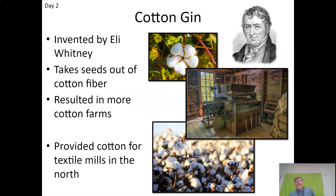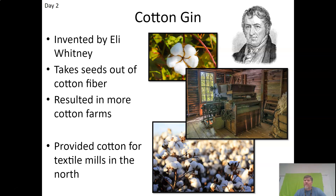One of the most important inventions is the cotton gin. This is often an area that's tested. The cotton gin takes seeds out of the cotton fiber. It resulted in more cotton farms, helps to make cotton textiles very profitable, and ultimately leads to the growth of slavery. It increases the demand for cotton because before it was so labor intensive — and labor is expensive. Even if it's slave labor, labor is expensive.